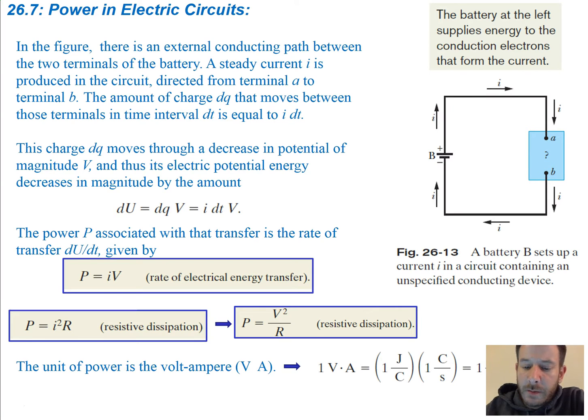The amount of charge dq that moves between those terminals in some time interval dt is equal to the amount of current times dt. And so this charge dq moves through a decrease in potential of magnitude v as it goes around. And thus, its electric potential energy decreases in magnitude by the amount...